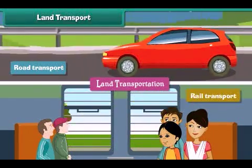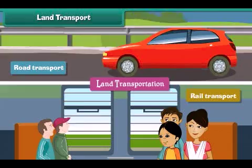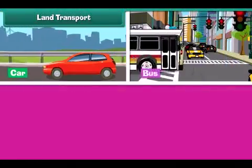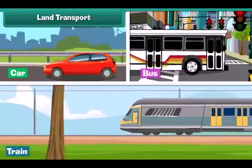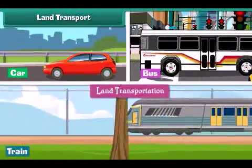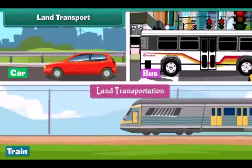The vehicles that carry passengers and goods by land, such as cars, buses and trains, are called means of land transport.